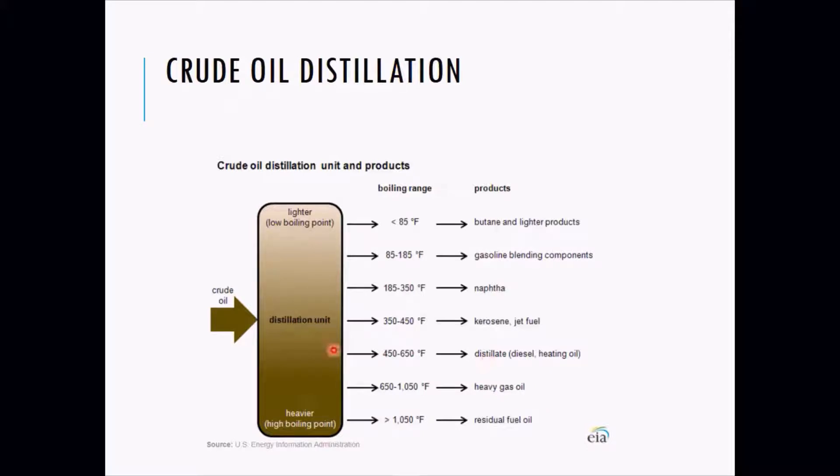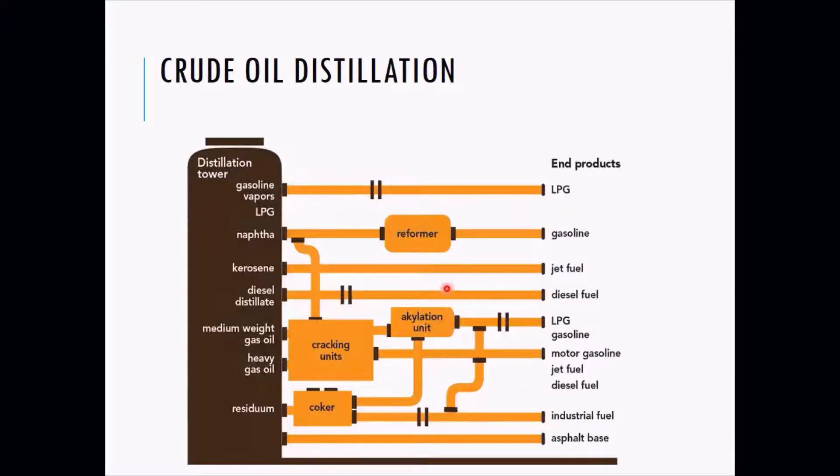When the crude is subjected to different temperatures, we get these byproducts. It is not like only 1000 liters of crude will get only one product. Depending upon the quality of the crude, whether it is sweet or light or sour or heavy, these are the different byproducts that we will get. Some byproducts might not be available depending upon the quality of the crude.